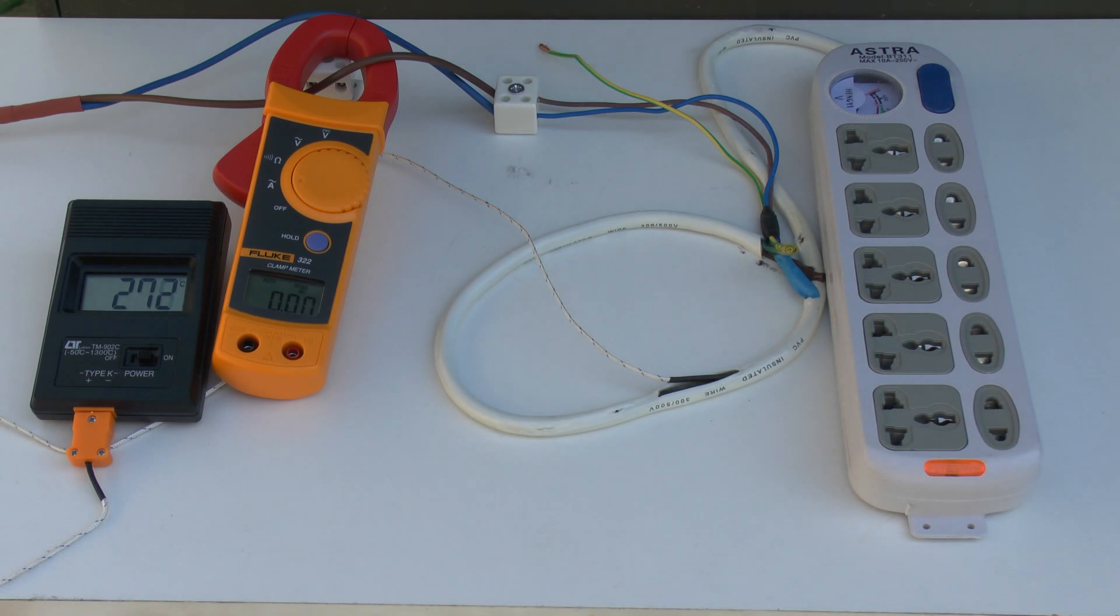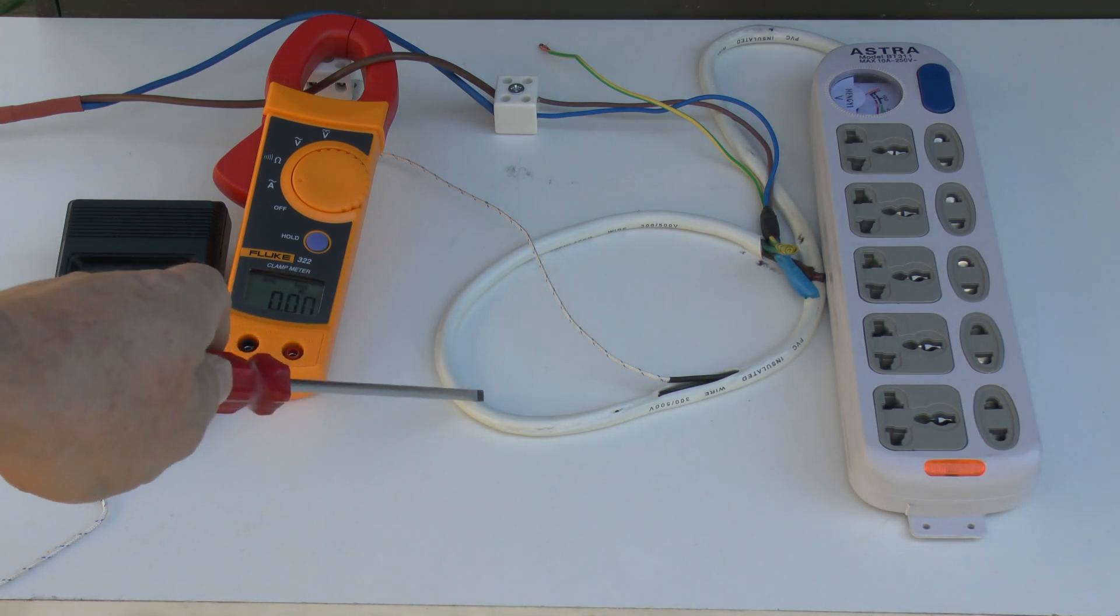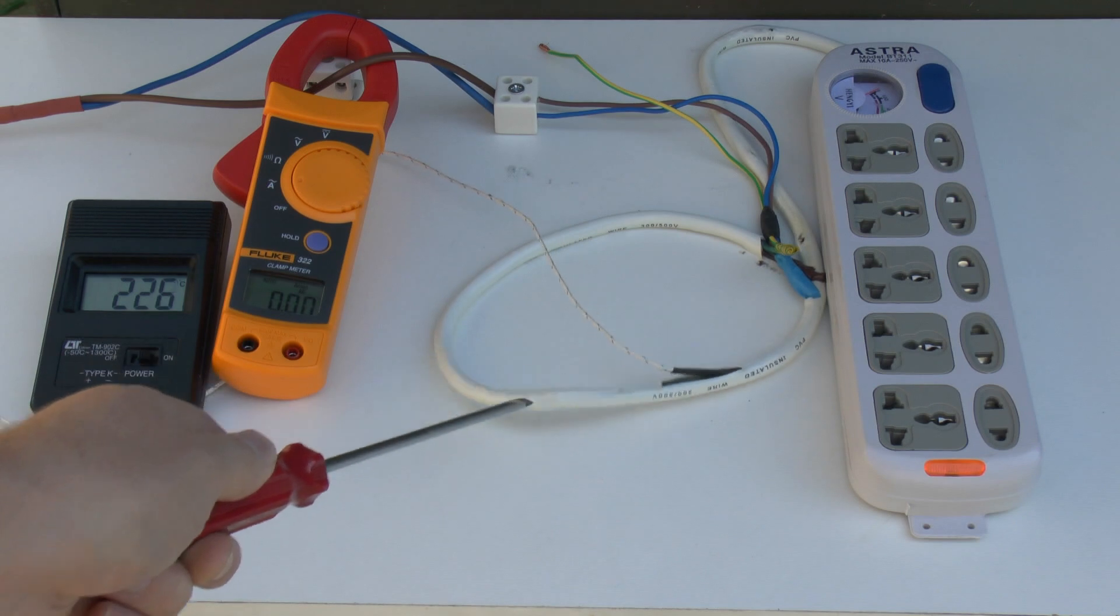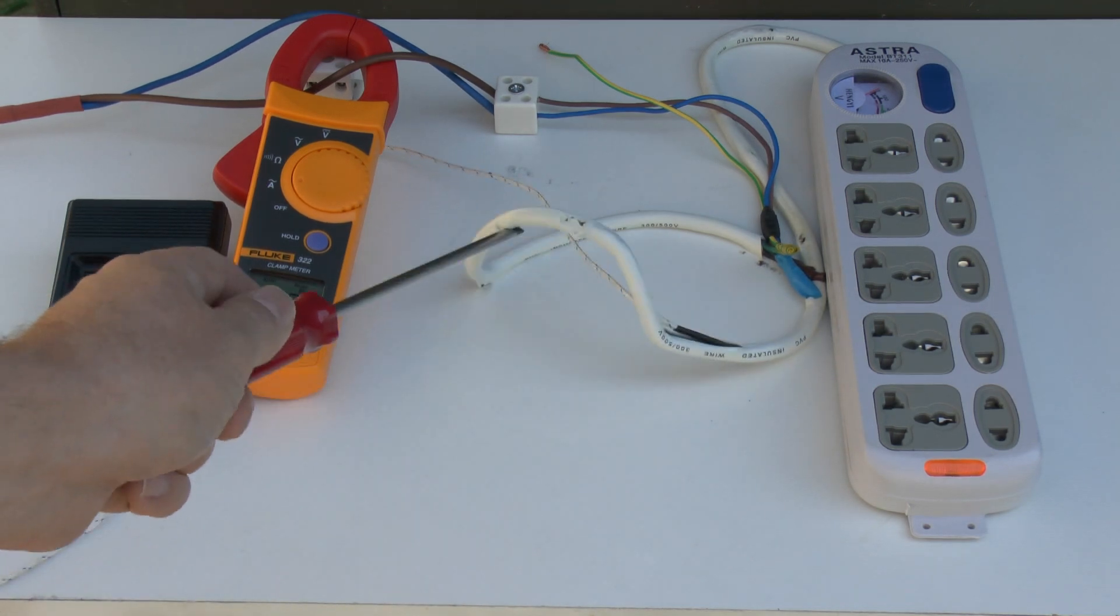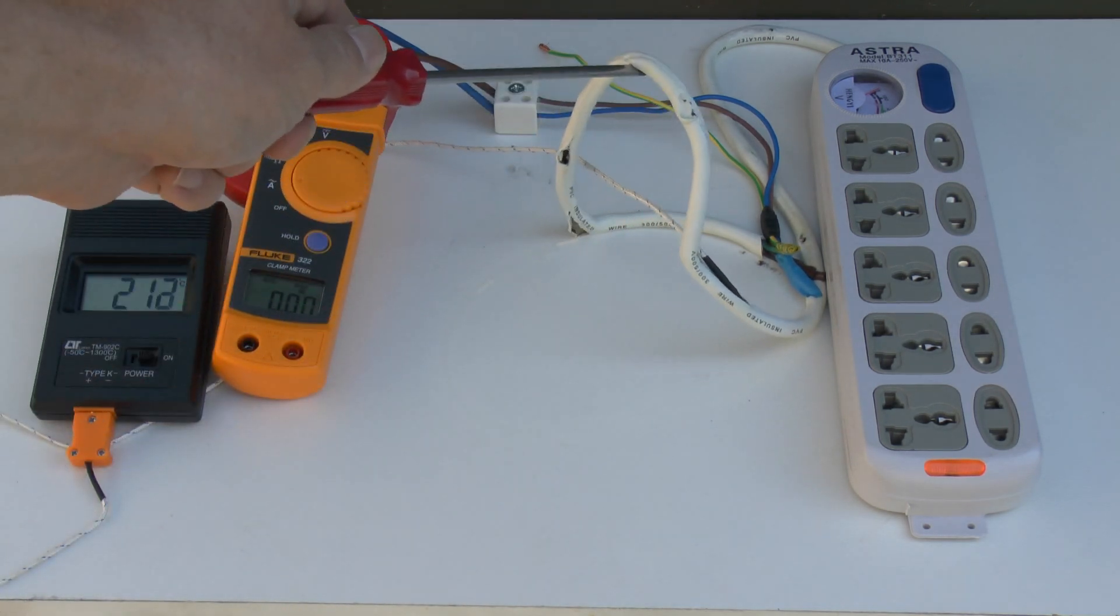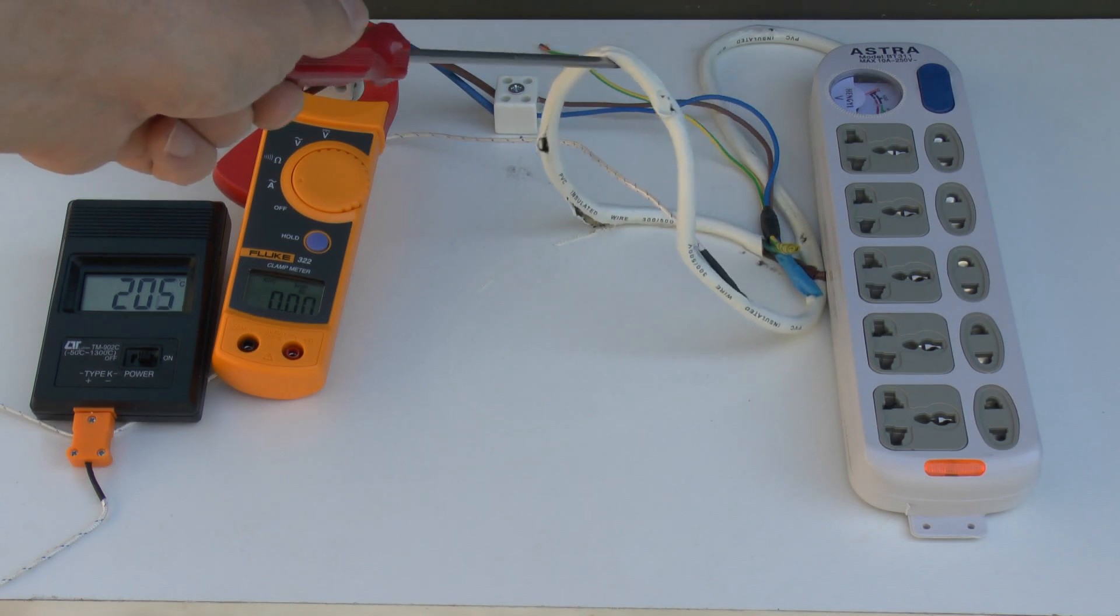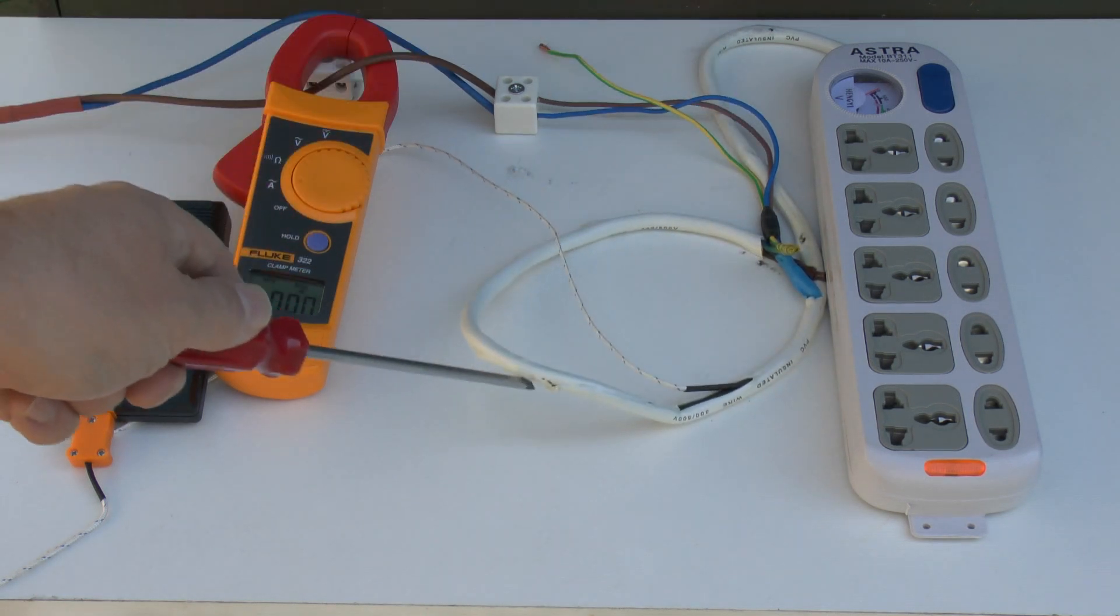I can see the temperature now dropping rapidly now that the current has been disconnected. This flex was just laying here out in the open which is the best possible case for cooling. As you can see it's starting to stick to the surface here.